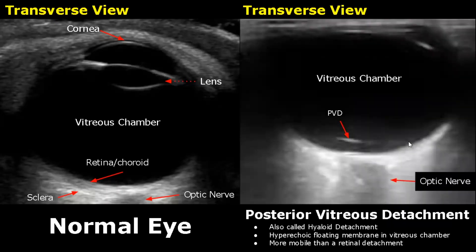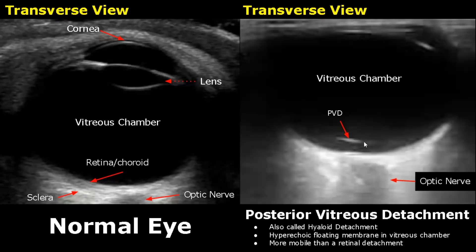A posterior vitreous detachment, also called hyaloid detachment, occurs when there is a separation between the retina and the vitreous body. It looks similar to a retinal detachment, but the main difference is that the hyperechoic membrane will be more mobile — it will move and float around really fast in the vitreous chamber. This is also a rhegmatogenous form of detachment.